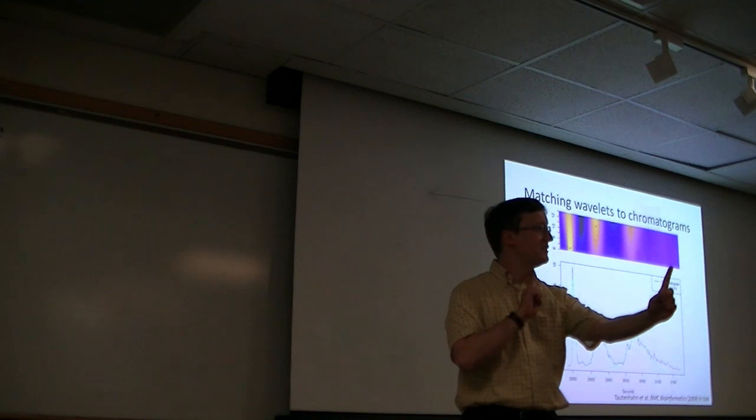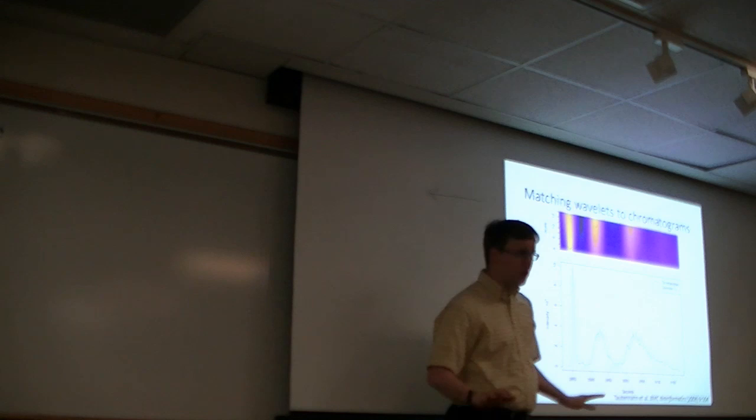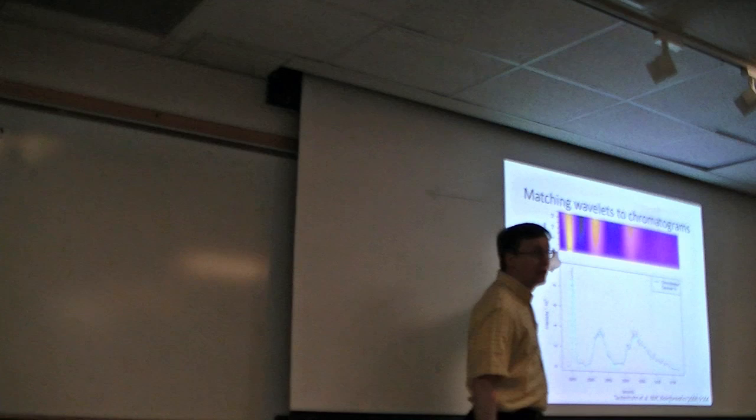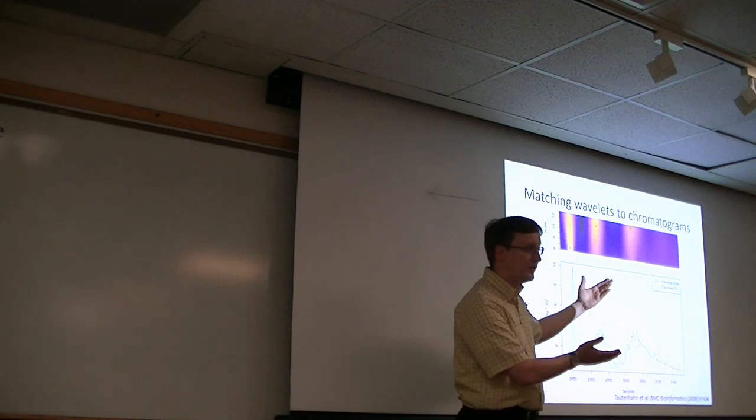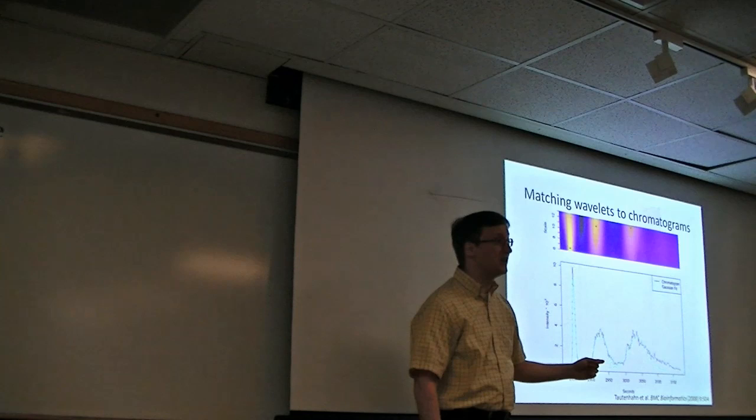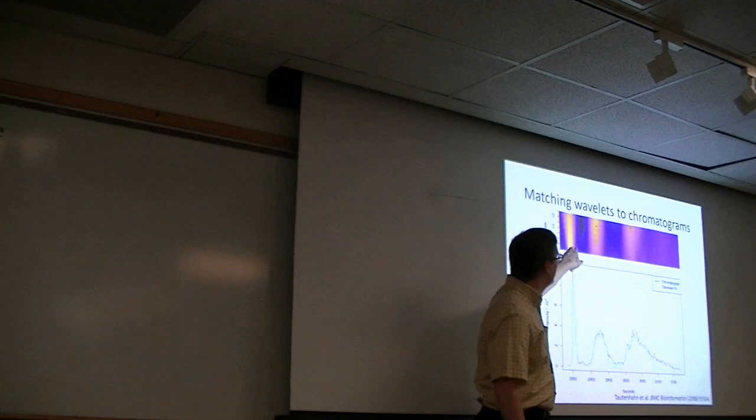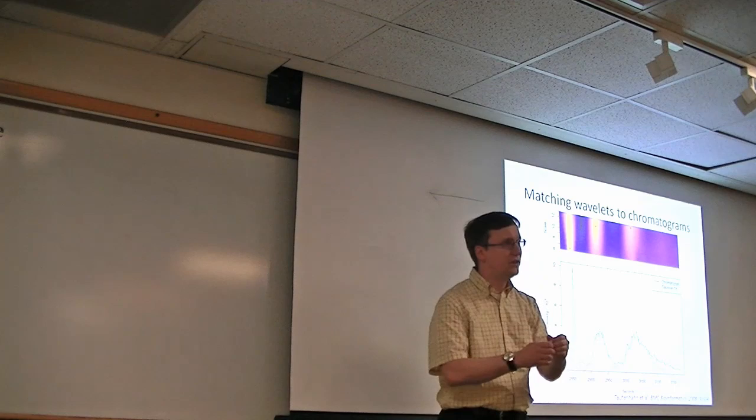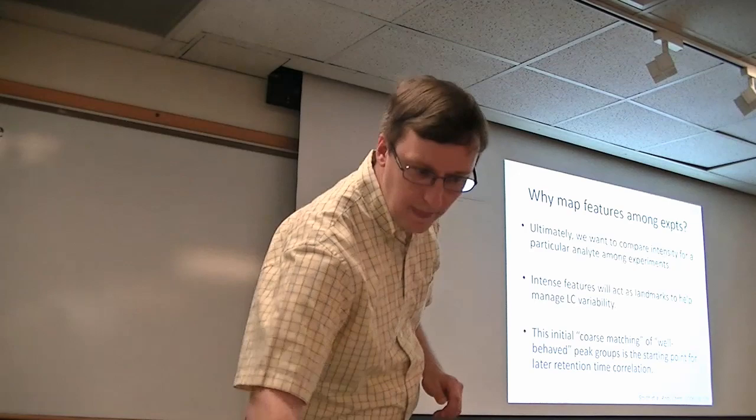We've already done our peak picking with the Ricker wavelet in the M over Z space. Now, we're going to turn that sideways and do it in a retention time space instead. They've kind of cheated in this image that I've taken from the paper here. We have a plot very much like the one we were looking at with CentWave yesterday. These are correlations to Ricker wavelets. But then when they show them superimposed on the chromatograms, they're showing them as Gaussians. A Ricker wavelet is not a Gaussian, but they're using the correlation values for the wavelets to figure out where to position these Gaussians on the data.